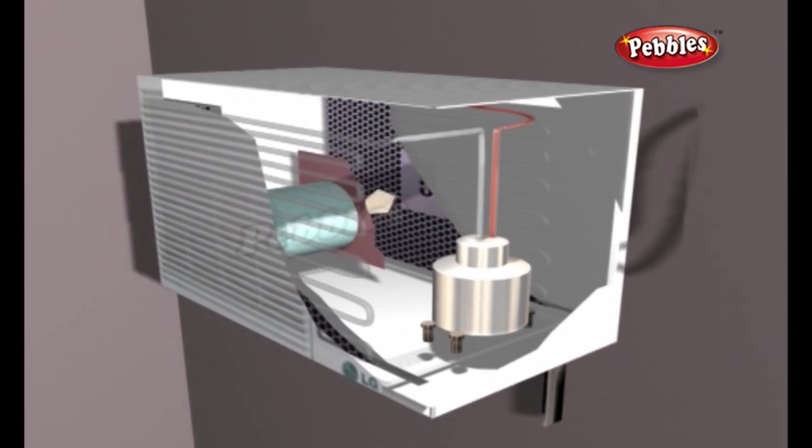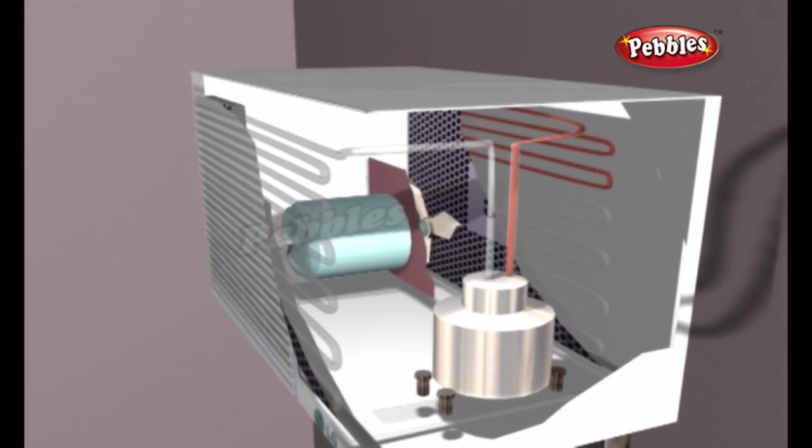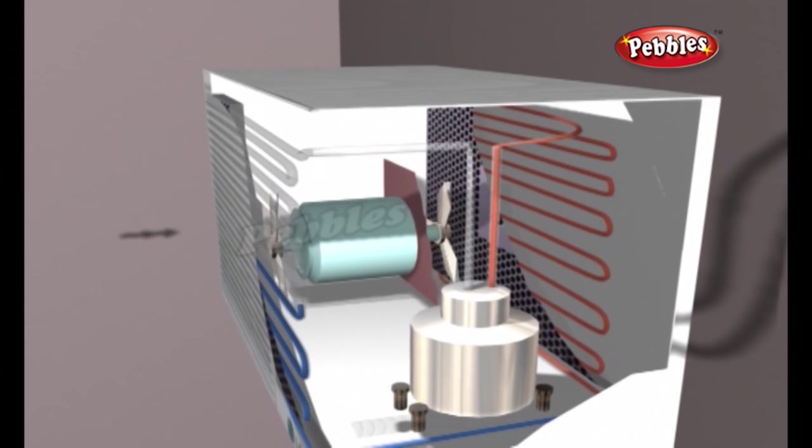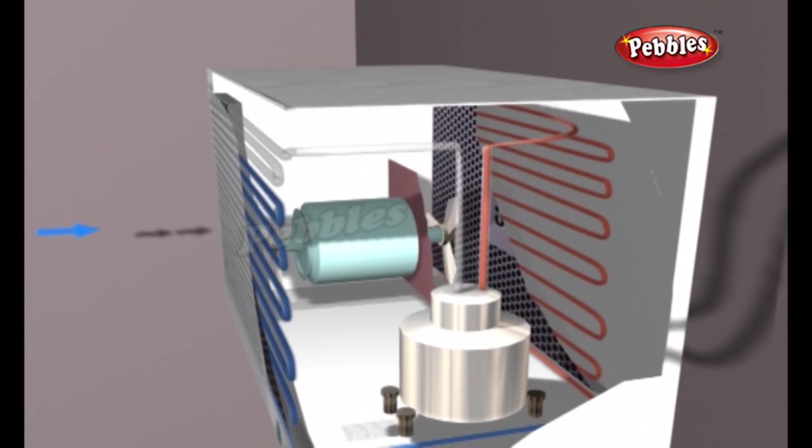The fan blade on the inside part of the unit continually draws room air over the evaporator coils which are cold. The fan blade on the outside part of the unit continually draws fresh outside air over the condenser coils which are warm.